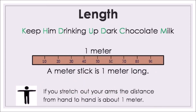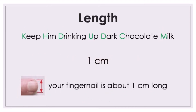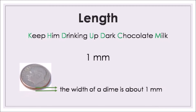For length, the metre can be related to the metre stick your teacher uses in class — it is one metre long. If you stretch out your arms, the distance from hand to hand is about one metre. One centimetre is pretty small: the length of your fingernail is about one centimetre. One millimetre is even smaller — the width of a coin, like a dime, is about one millimetre.